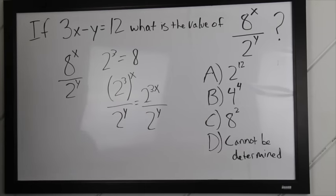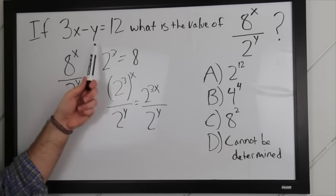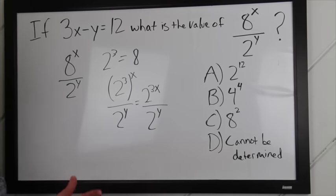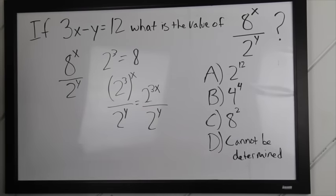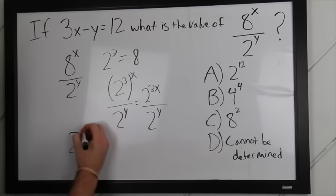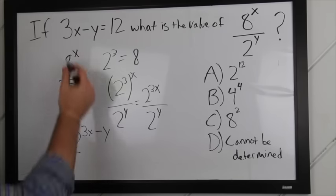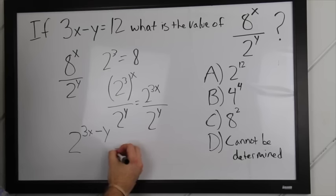Now, hopefully, if you look back at your problem here, you notice that you have 3xy, 3x, and y. So, if you remember your exponent rules, when we're dividing numbers, we're going to subtract our exponents. So, this whole thing is the same as 2 to the 3x minus y. We're subtracting our exponents. We also know that 3x minus y equals 12.